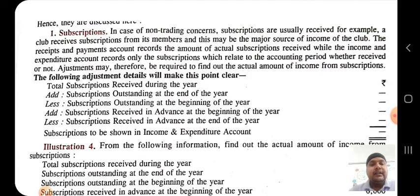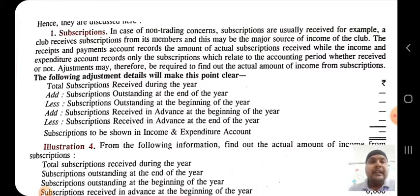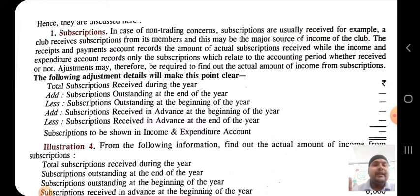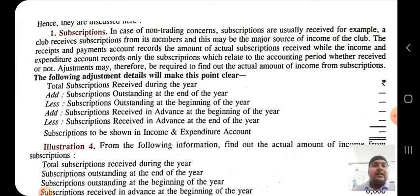This becomes an important question — how we will calculate the amount of subscription to be shown in the income and expenditure account, because when we are talking about the receipts and payment account, however much subscription money we received during the year, whether it is received for the past year or for the future year — suppose in 2020 we received total subscription of 1 lakh rupees. Suppose some subscription is related to a previous year and some is advance for 2021.